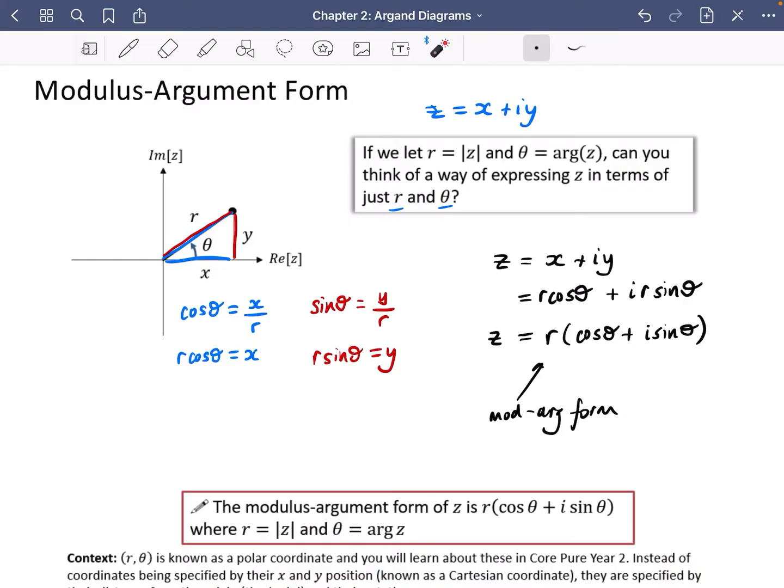The reason this is useful is because the x plus iy form is talking about coordinates, whereas this one is talking about how far away from the origin it is and what angle it has moved around. As you go through this chapter and complex numbers in year two, you will find how powerful that can be as a tool.